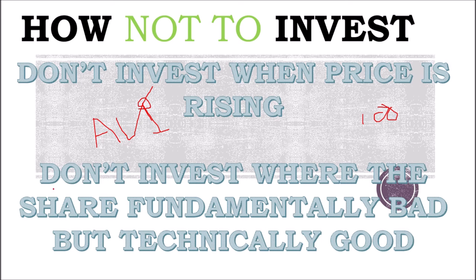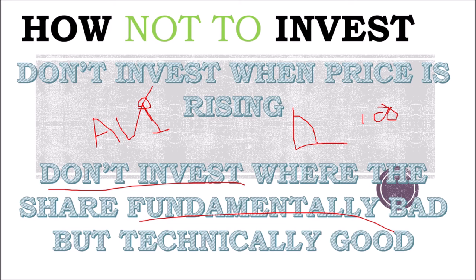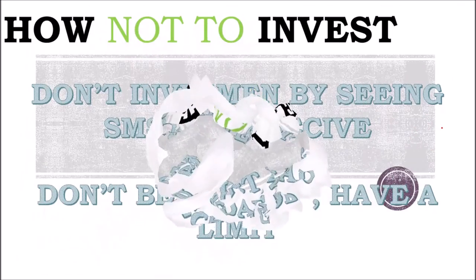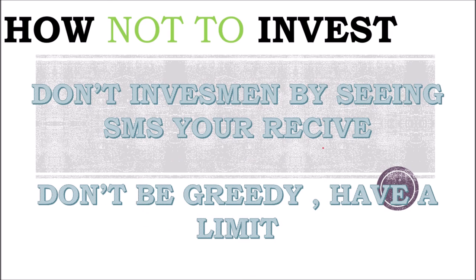Another thing: don't invest in shares that are fundamentally bad but technically good. For example, a share that has fallen from 100 rupees to 10 rupees may technically indicate it is oversold and you should accumulate — but fundamentally, the company's performance and future may be very weak and it may not last. People who follow technical analysis blindly without considering fundamentals will invest and lose their money. It is always best to give 50% weight to technical analysis and 50% to fundamentals.